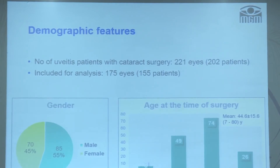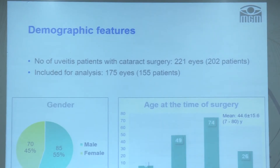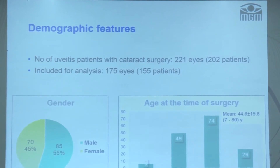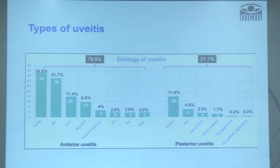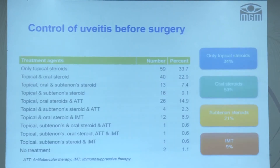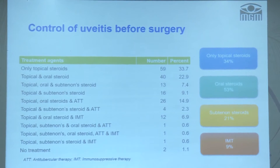We had 221 eyes but after exclusions, the final analysis included 175 eyes of 155 patients. The male-to-female ratio was approximately equal, and most patients were young to middle-aged adults with a mean age of 44.6 years. Most patients had anterior uveitis, but nearly one-fifth had intermediate or posterior uveitis.